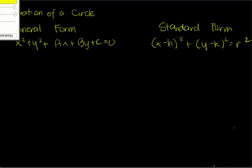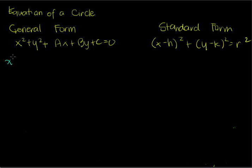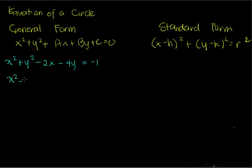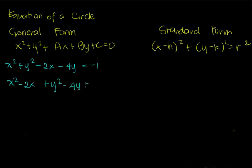We're going to have an actual example of an equation written in general form and transform it to its standard form. The equation we have is x squared plus y squared minus 2x minus 4y equals negative 1. As a tip, first rearrange the terms according to their variables — put together terms which have the same variable: x squared minus 2x plus y squared minus 4y equals negative 1.